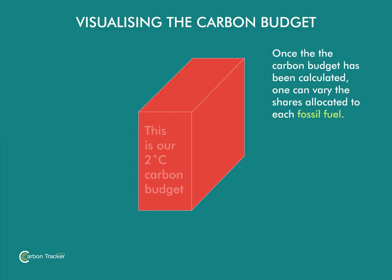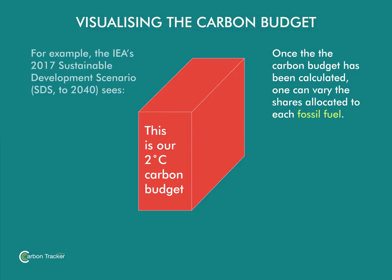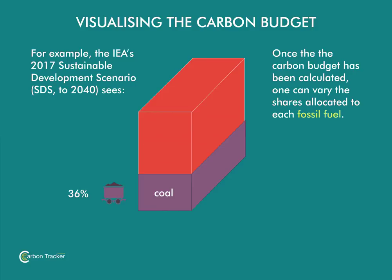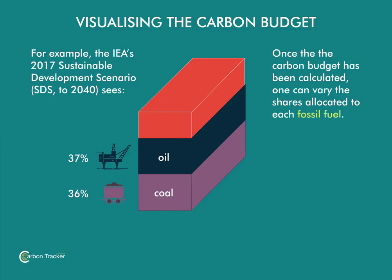After taking into consideration all of these factors, we now have our CO2 budget for the energy sector only that keeps within 2 degrees of global warming — such as the 2017 Sustainable Development Scenario from the IEA, which assumes a 50% probability of delivering this outcome. This can now be split up between coal, oil, and gas, to give an impression of the possible CO2 constraints that could be imposed on demand for these products, if policy makers are serious about keeping to the targets in the Paris Agreement.